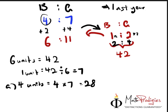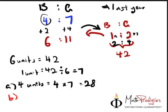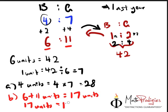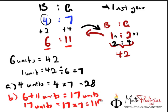For part B, let's move on to part B. The question is asking you for, find the total number of children in the club this year. Total number of children in the club this year is actually equals to 6 plus 11 units. So 6 plus 11 units is going to give you 17 units. 17 units equals to 17 times 7. Very simple. Use our handy-dandy calculator. 17 times 7 gives you 119 children. This year, you have 119 children.